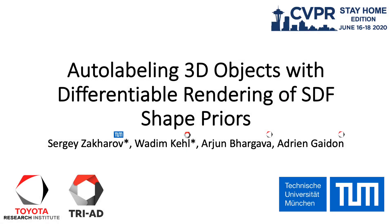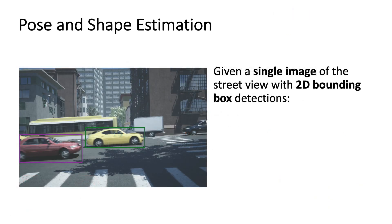In this work, we present an automatic annotation pipeline to recover 9D cuboids and 3D shapes from pre-trained off-the-shelf 2D detectors. Given 2D bounding box detections, we aim to answer two questions.